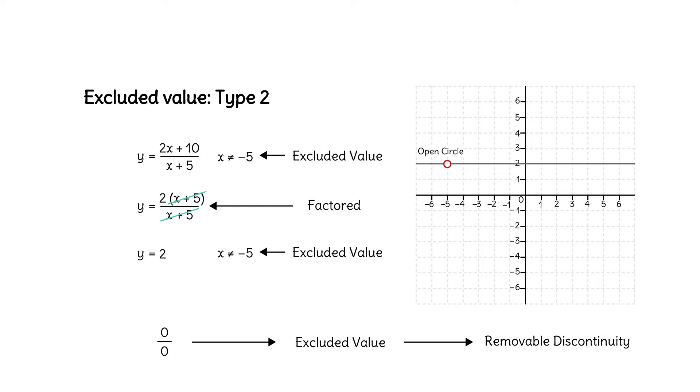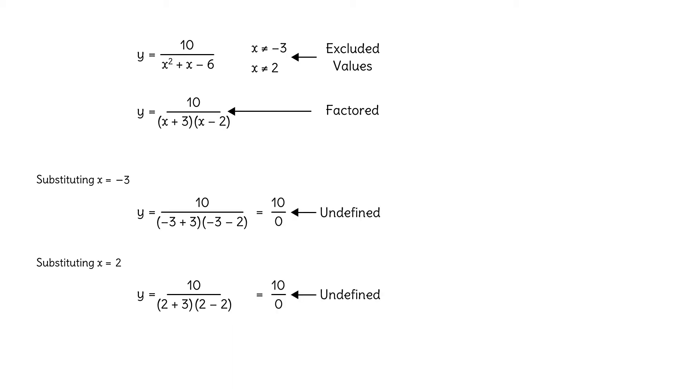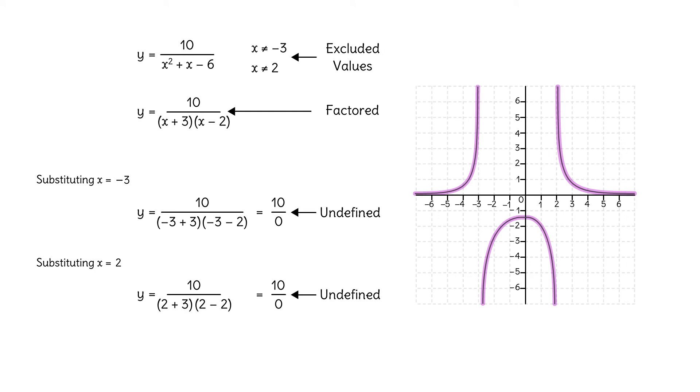Let's practice finding excluded values. y equals 10 over x squared plus x minus 6. Can you factor the denominator? x plus 3 times x minus 2. Can you see the excluded values? What would make the denominator 0? Negative 3 and 2. What kind of excluded values are these? They result in division by 0 without canceling any factors. So in the graph, these excluded values give us vertical asymptotes.